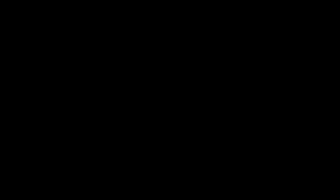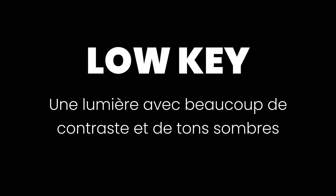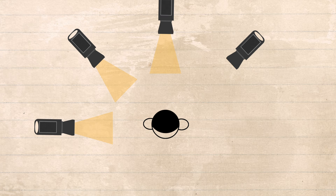La première chose à retenir, c'est que contrairement aux comédies, qui sont éclairées plutôt de face, dans les films d'horreur, on cherche à créer du mystère et à cacher des éléments de décor, pour mettre le spectateur en alerte. Donc pour ça, on va plutôt éclairer en low-key, ce qu'on appelle aussi le clair-obscur en photographie. C'est une image avec beaucoup de contraste, et en général des projecteurs qui sont plutôt dirigés en contre de votre personnage et de votre caméra. Ça permet de découper le sujet, et même de venir jouer avec les silhouettes pour créer de la tension.